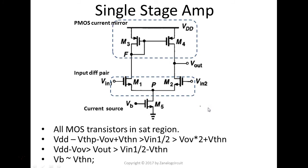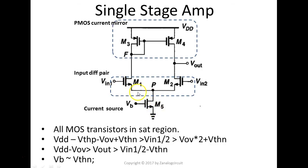In order to keep all transistors in the saturation region, what are the conditions for Vin and Vout? For Vin, if we tie Vin1 and Vin2 together and lower that voltage to a certain point, M5 will go out of the saturation region. That minimum point is one overdrive of M5 plus one Vgs — essentially two overdrives plus one NMOS threshold voltage. That is the minimum for Vin1 and Vin2.